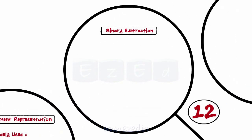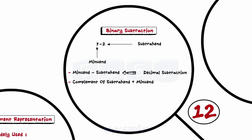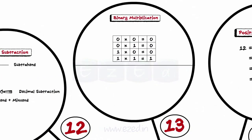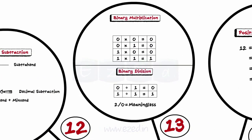The steps for subtracting two binary numbers: (1) compute the two's complement of the subtrahend; (2) add the two's complement of the subtrahend to the minuend and drop the high-order 1 — this is your difference. Binary multiplication and division are carried out in the usual way used for decimal numbers.